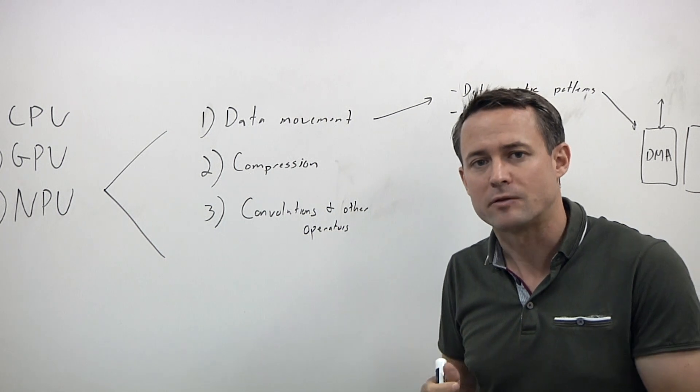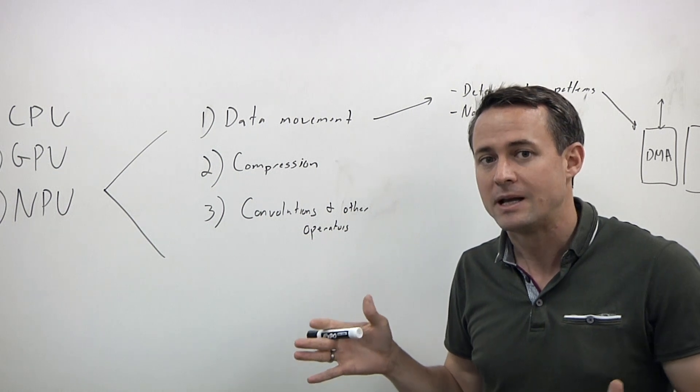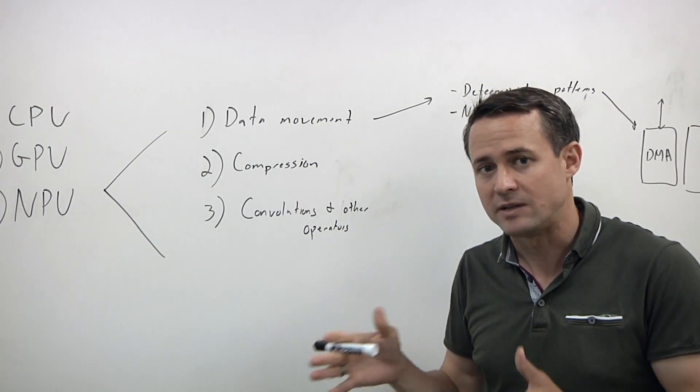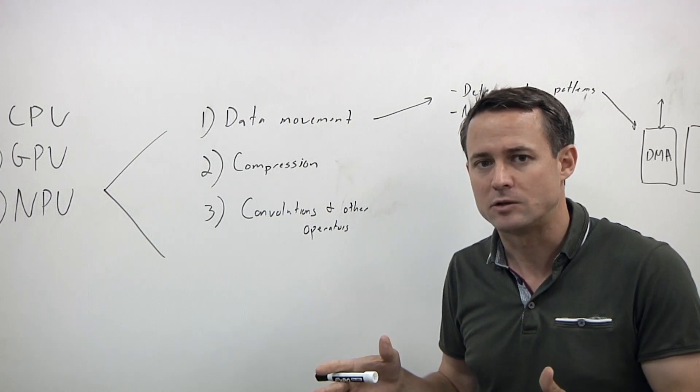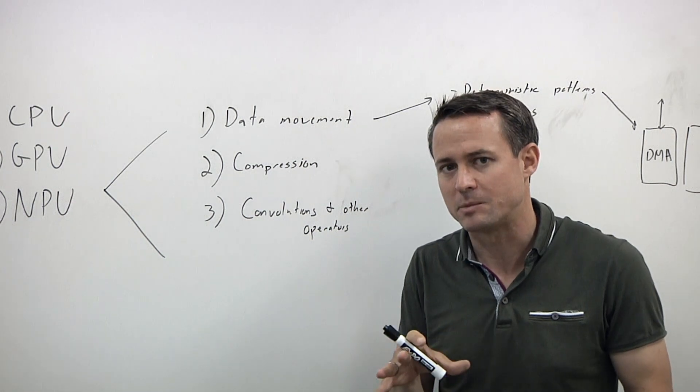That's not the case for machine learning inference. You actually know at compile time how you're going to traverse arrays. You can even choose and manipulate how you're going to do that. So that radically changes the memory system.